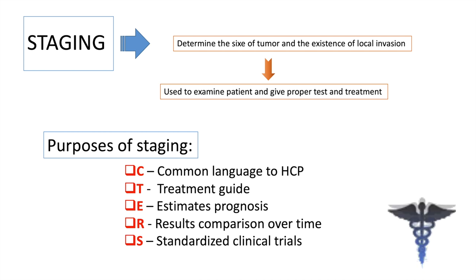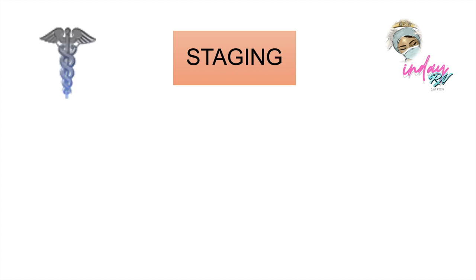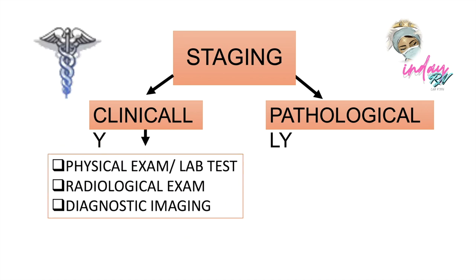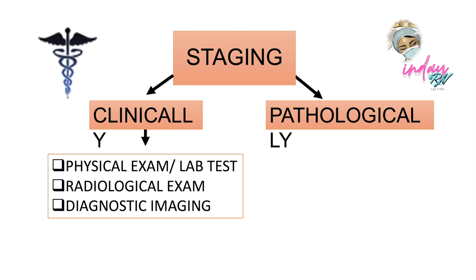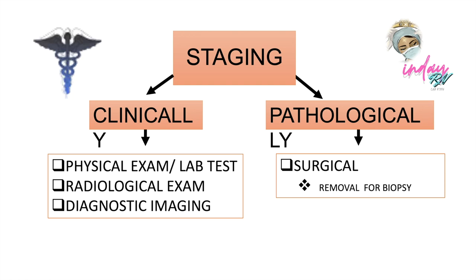In staging, there are different types of tests depending on the type of cancer the patient has. We can classify them as clinical or pathological. In clinical staging, we can do physical examinations, laboratory tests, radiological examination, and diagnostic imaging — such as CT scan, MRI, PET-CT, and other tests that help check the stage of the cancer. In pathological staging, we check surgical reports — for example, if the patient went for surgery and tissues were removed, we can use those for biopsy to diagnose the stage of the cancer.